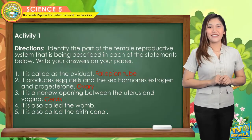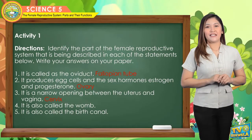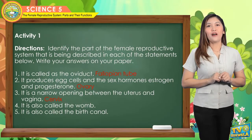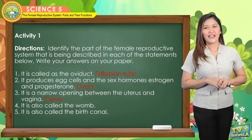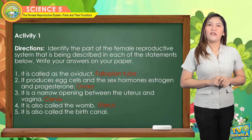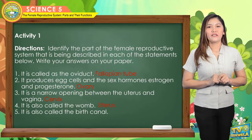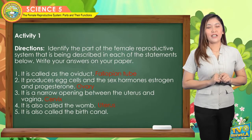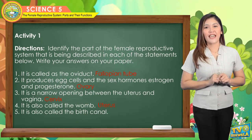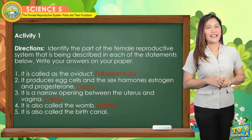Number four: it is also called the womb. The answer is uterus. For number five, it is also called the birth canal. The answer is vagina. Well done for the first activity!